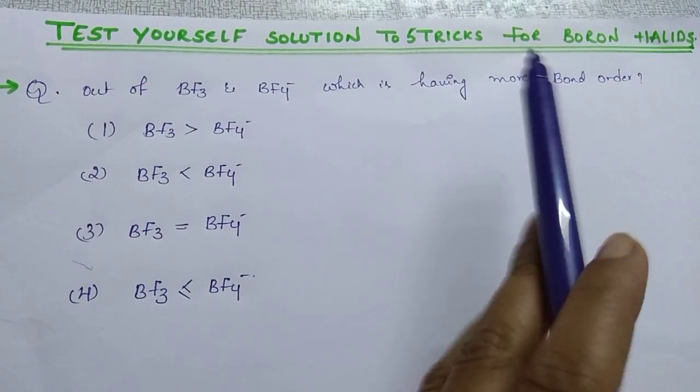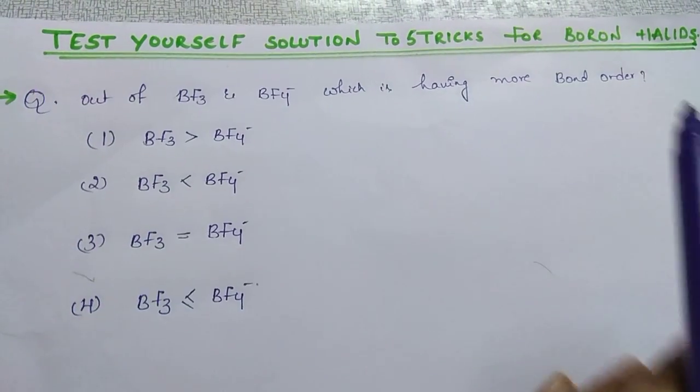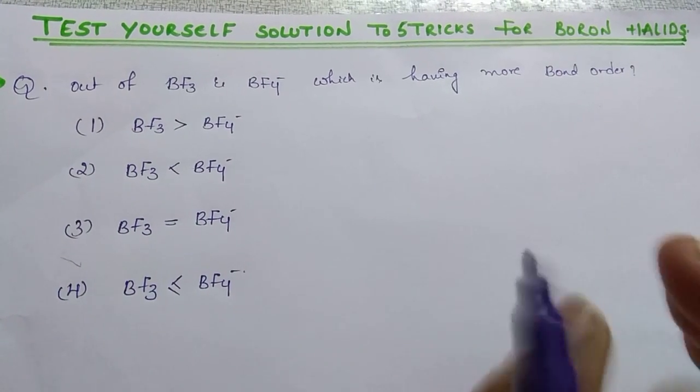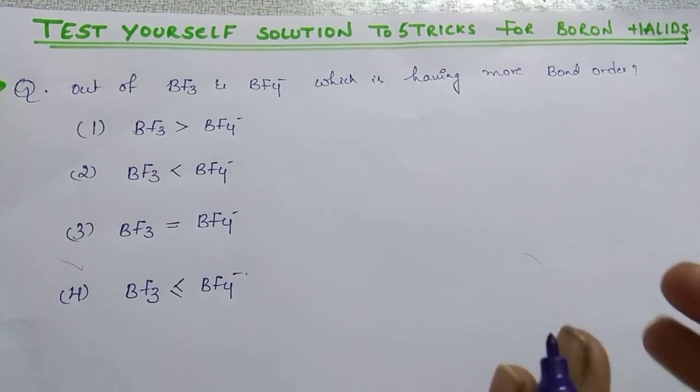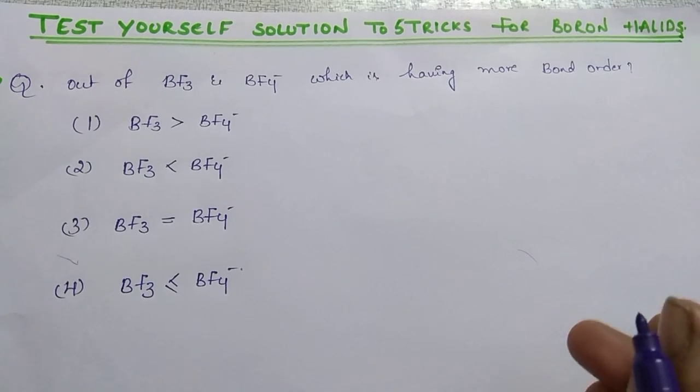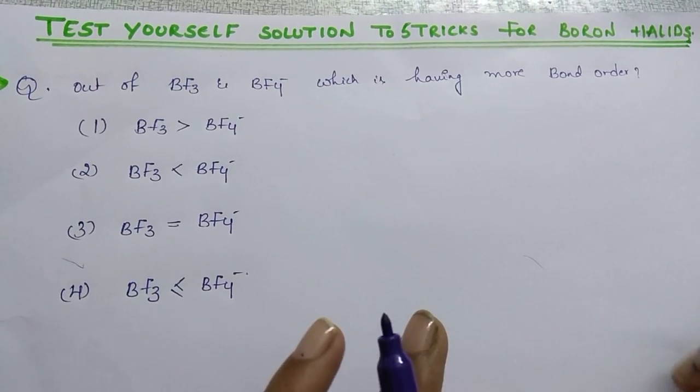This topic is from Boron family which is also known as 13th group and you can say 3rd A also. This is the most important topic. Whatever weekend examinations you write, if you check out your papers based upon Boron family, definitely they ask questions from Boron Halides.